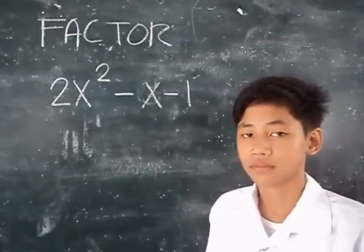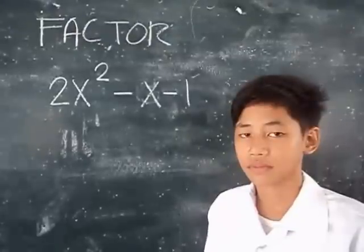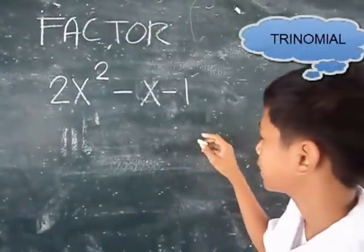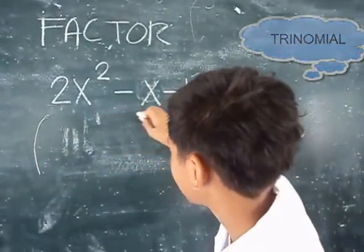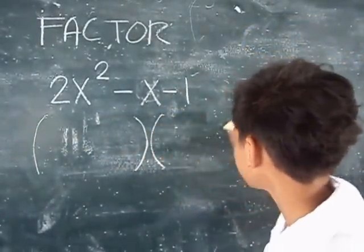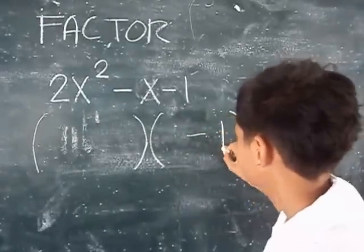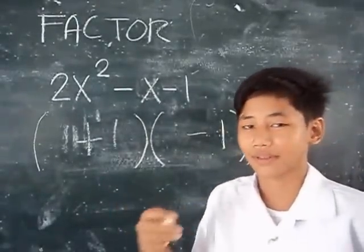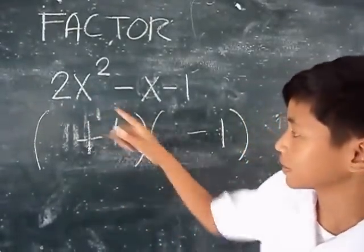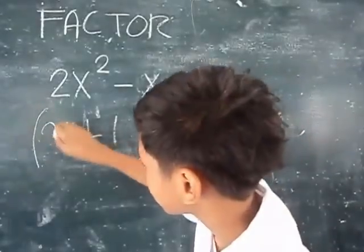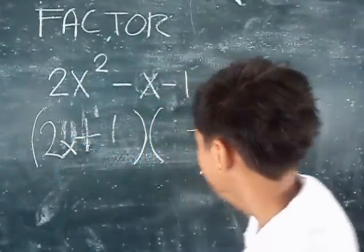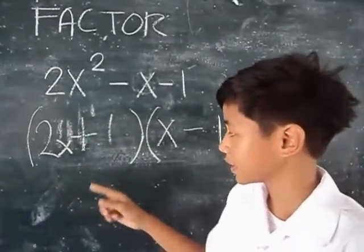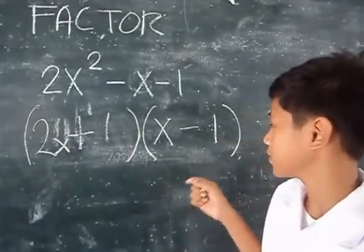Factor 2x² minus x minus 1. To factor this trinomial, first get the factor of 1, then get the factor of 2x². The factors are (2x plus 1) times (x minus 1).